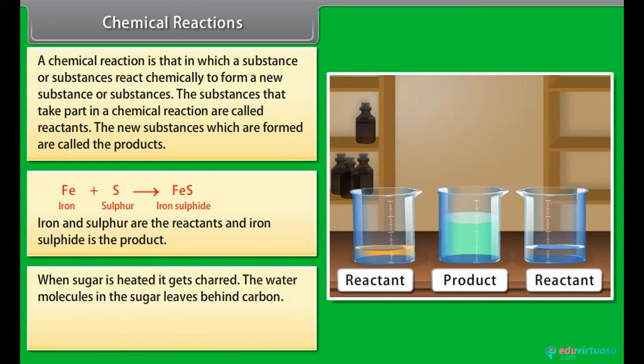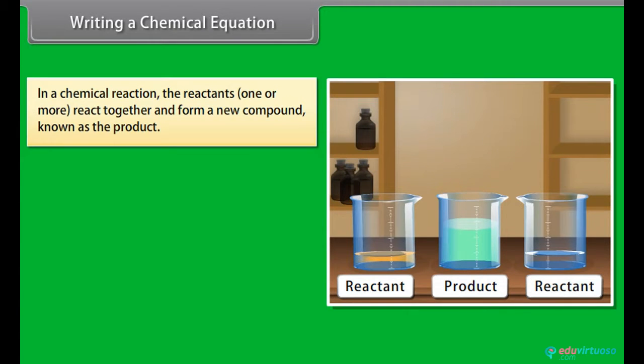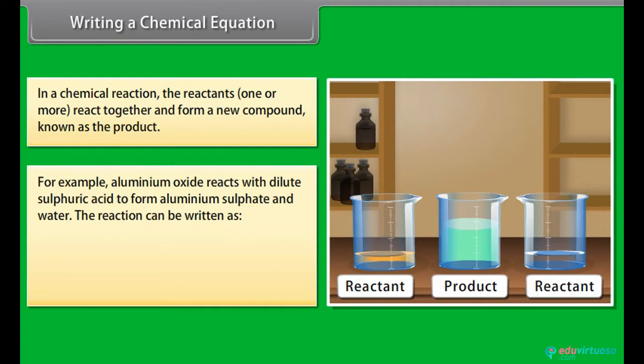Iron plus sulfur gives iron sulfide. Iron and sulfur are the reactants and iron sulfide is the product. When sugar is heated it gets charred; the water molecules in the sugar leave behind carbon. Writing a chemical equation: In a chemical reaction the reactants react together and form a new compound known as the product. For example, aluminum oxide reacts with dilute sulfuric acid to form aluminum sulfate and water.